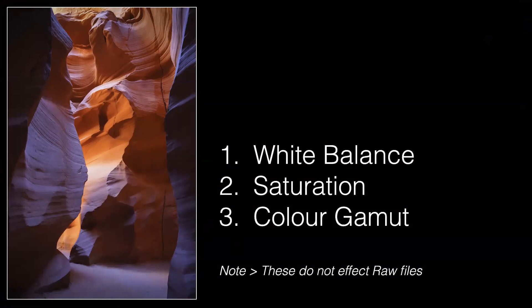The first three things I want to talk about are white balance, saturation, and colour gamut. These don't flow through to the RAW files, but if you're using a mirrorless camera with an electronic viewfinder or monitor, they do flow through to those ways of viewing our scene. Many photographers shoot RAW and JPEG and need to quickly get JPEG images to their clients, such as sports photographers, so they do need to do some colour controls actually in camera.